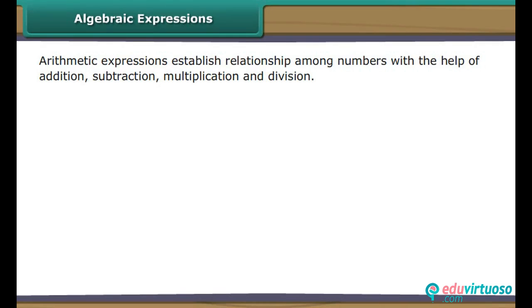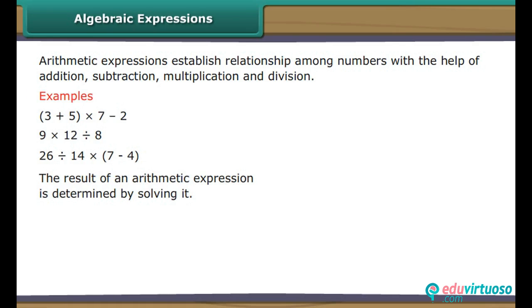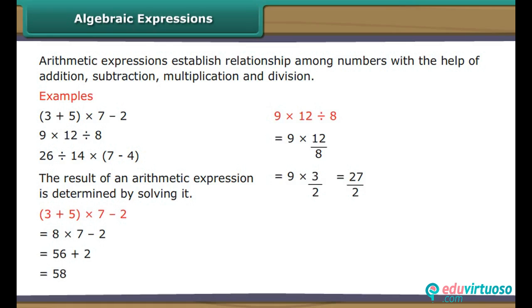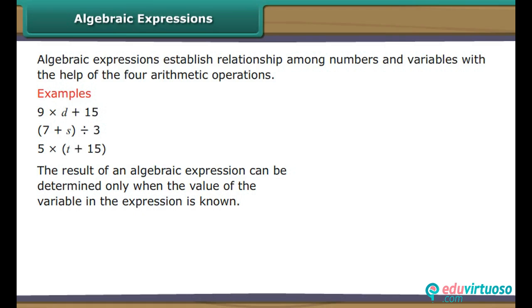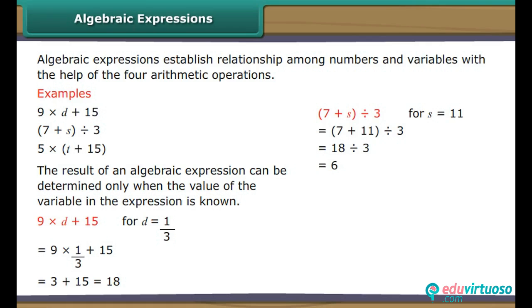Arithmetic expressions establish a relationship among numbers with the help of addition, subtraction, multiplication, and division. The result of an arithmetic expression is determined by solving it. Algebraic expressions establish relationships among numbers and variables with the help of the four arithmetic operations. The result of an algebraic expression can be determined only when the value of the variable in the expression is known.